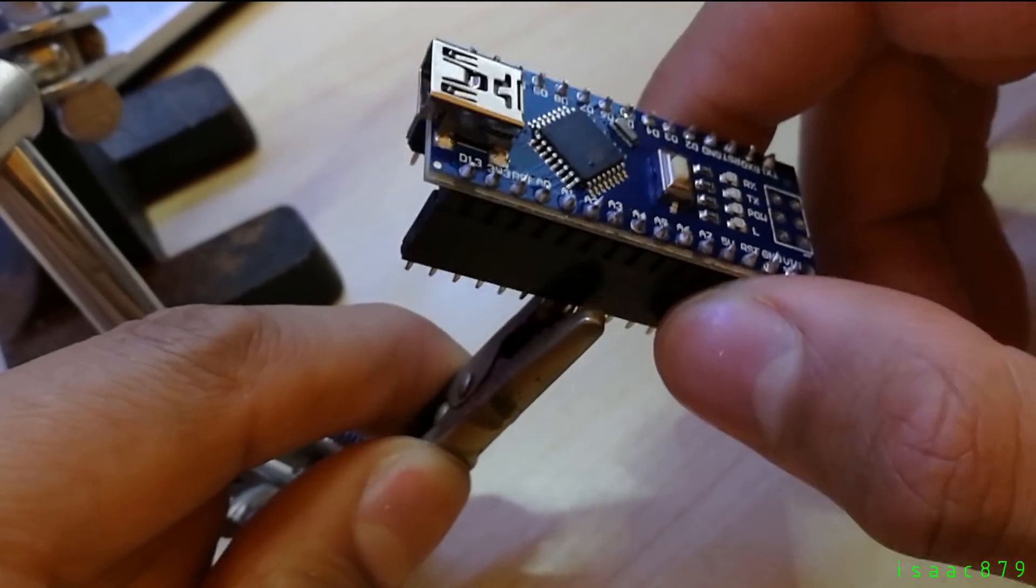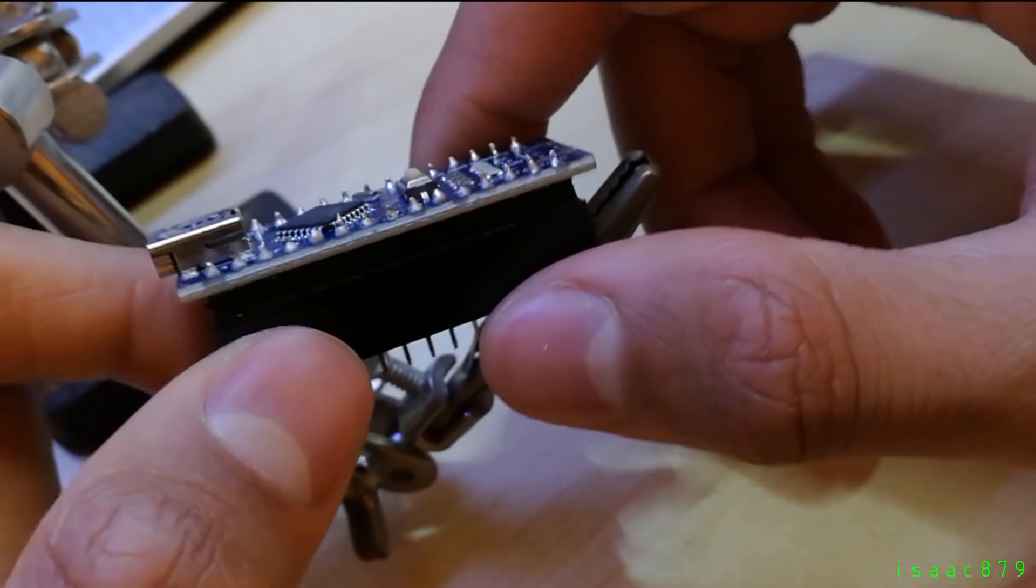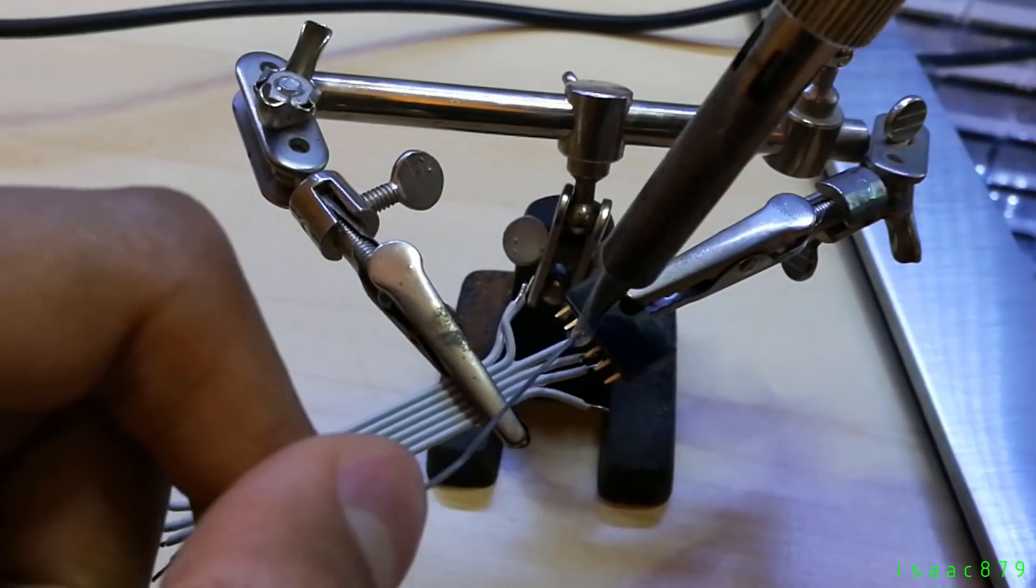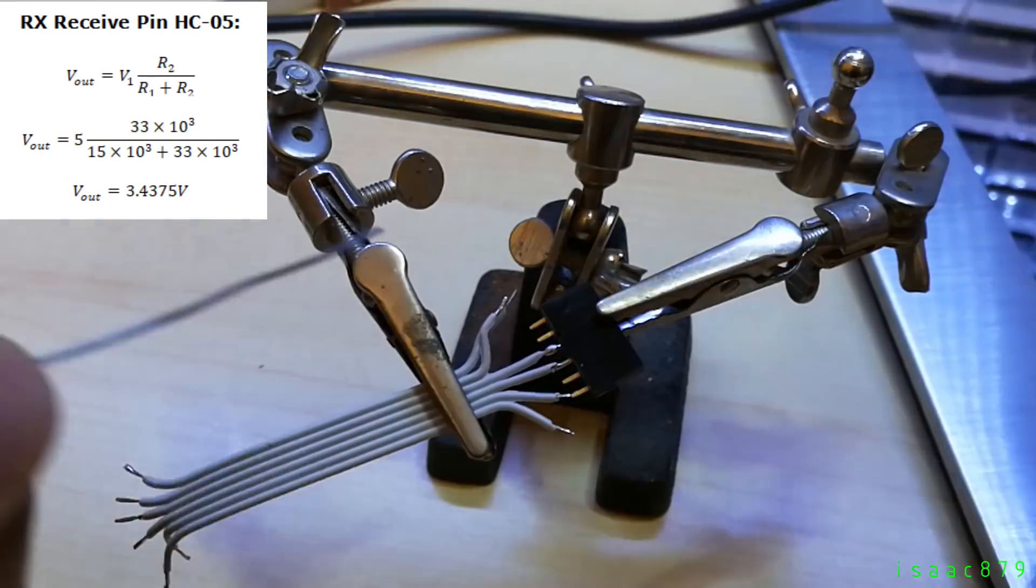The HC-05 Bluetooth module requires another potential divider to reduce the voltage to the RX pin as it's rated for 3.3V, not 5V, which the Arduino uses. Again here is how I calculated the resistor values.